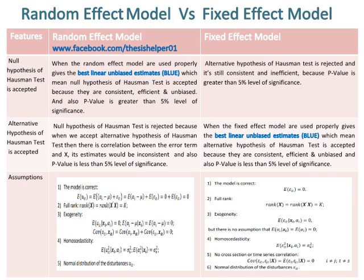The assumptions of the Random Effect Model are 5: the model is correct, full rank, exogeneity, homoscedasticity, and normal distribution of disturbance UIT. The assumptions of the Fixed Effect Model are 6: the model is correct, full rank, exogeneity, homoscedasticity, no cross-section or time series correlation, and normal distribution of disturbance UIT.